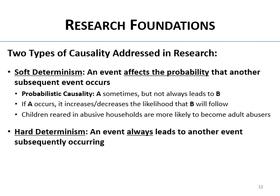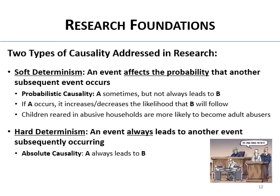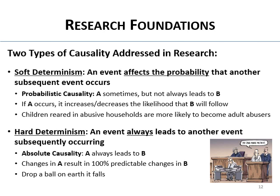The other type of causality is hard determinism — when an event always leads to some subsequent event. It's absolute causality where A always leads to B. Changes in A result in a 100% predictable change in B every time. We don't get a lot of these in psychology; they're more common in the hard sciences — you drop a ball and the ball falls. We deal mostly with soft determinism in psychology. One example of hard determinism: decapitation always leads to death.